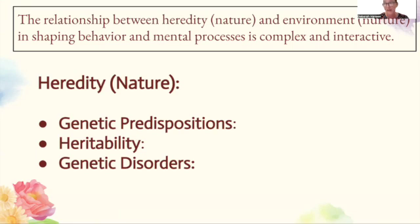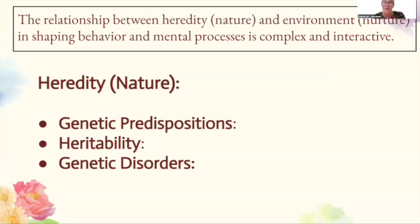The second key point is heritability — the concept of how we measure the variations in a trait within a population that can be attributed to genetic differences. Traits like height have high heritability because they're strongly influenced by genes. The third is genetic disorders: certain behaviors and mental processes are directly impacted by genetic disorders such as Down syndrome or Huntington's disease, which can affect cognitive abilities and emotional functioning. There's a real close link here with AP bio and AP stats — I almost call it the trilogy of APs because there's so much overlap.